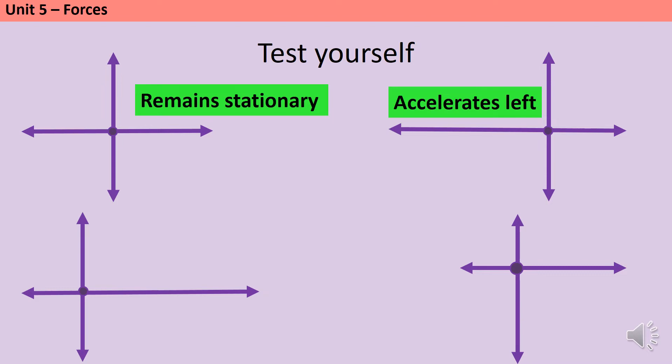In a similar way, my third object has got a larger force pulling towards the right, so it's going to accelerate towards the right. And then my final example has got a bigger downward force, so maybe I've suddenly hung a weight off this object, and also a force to the right, a resultant force to the right.